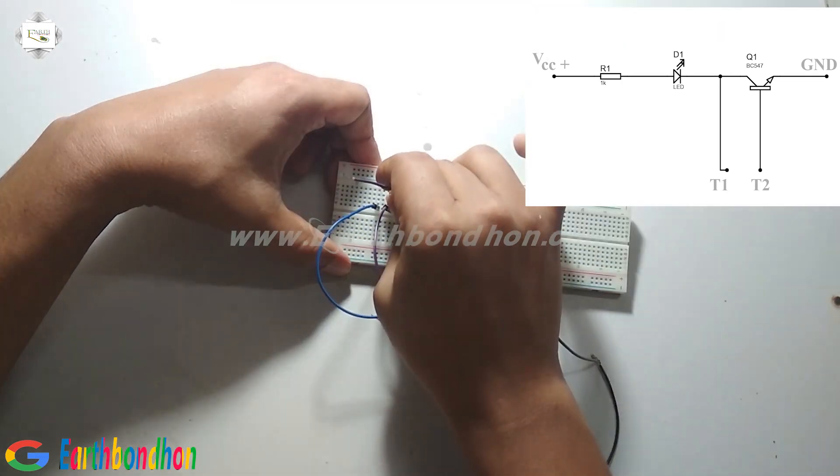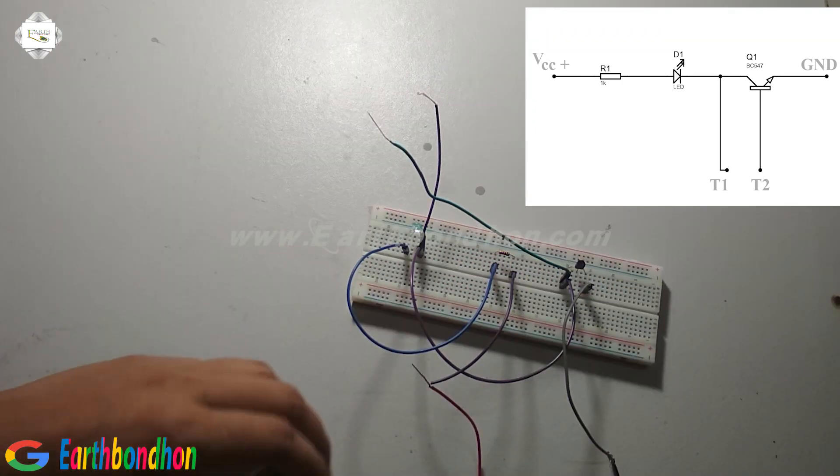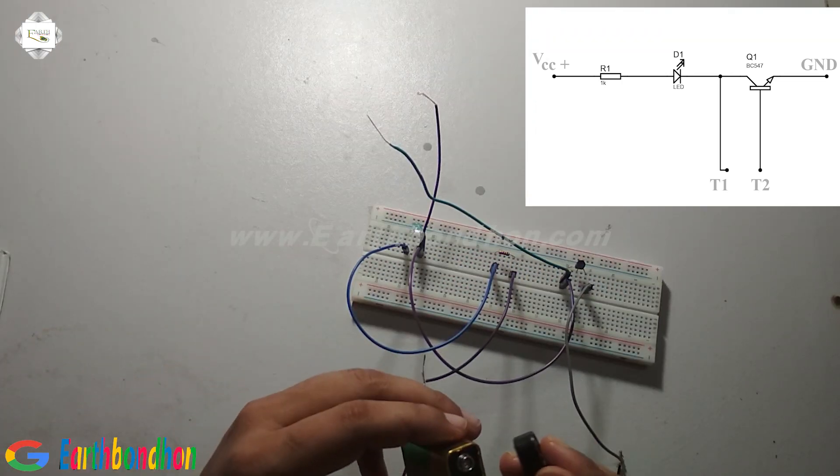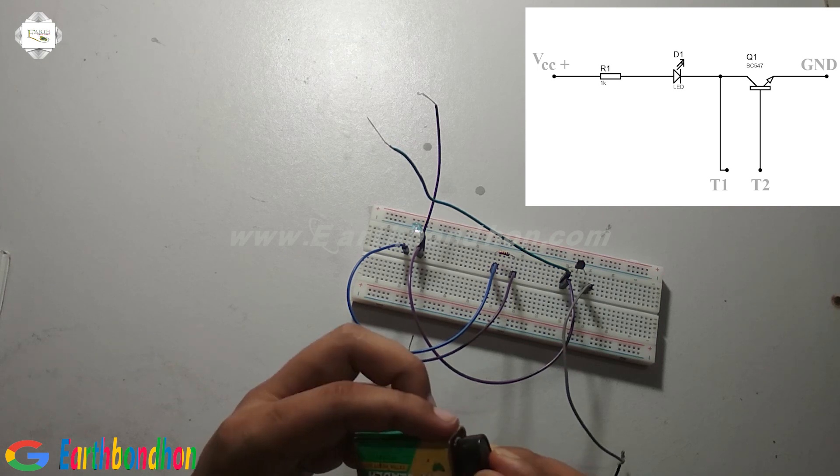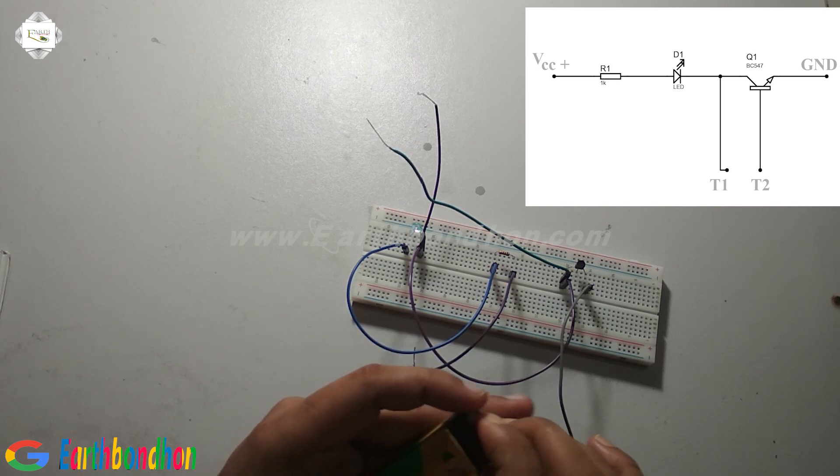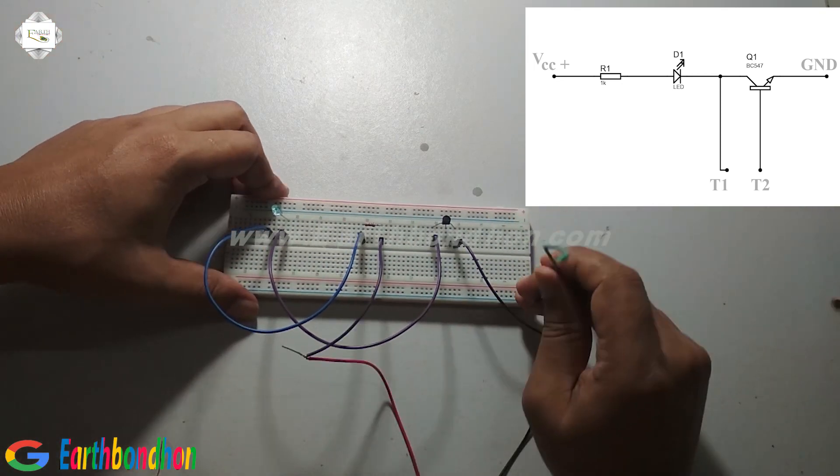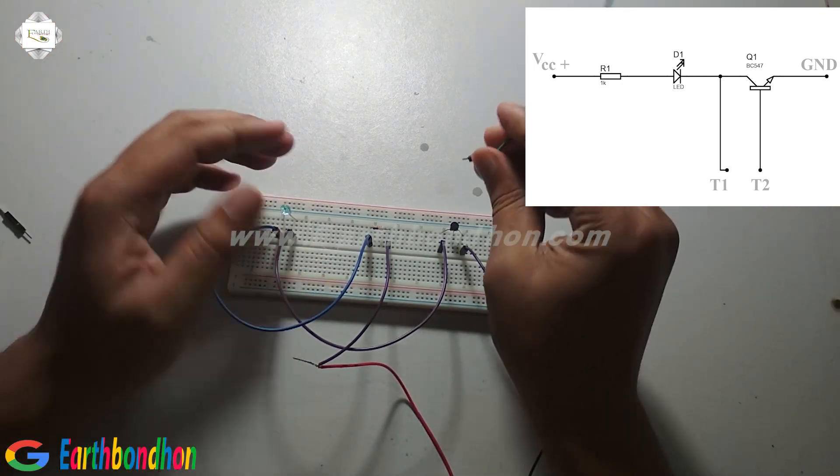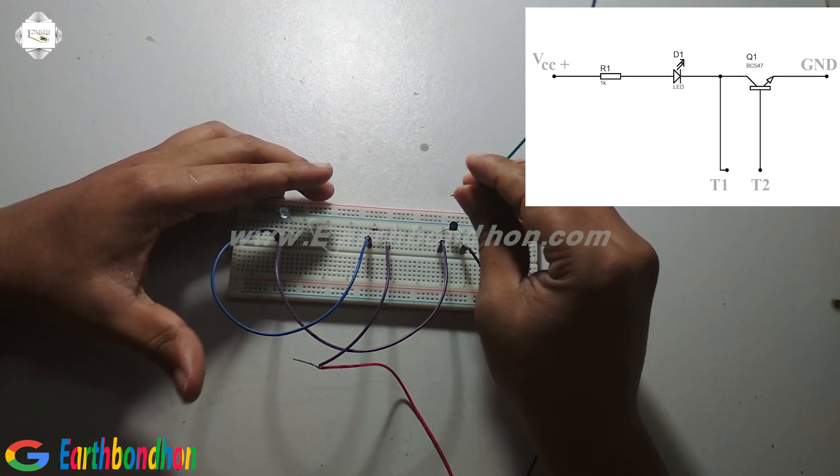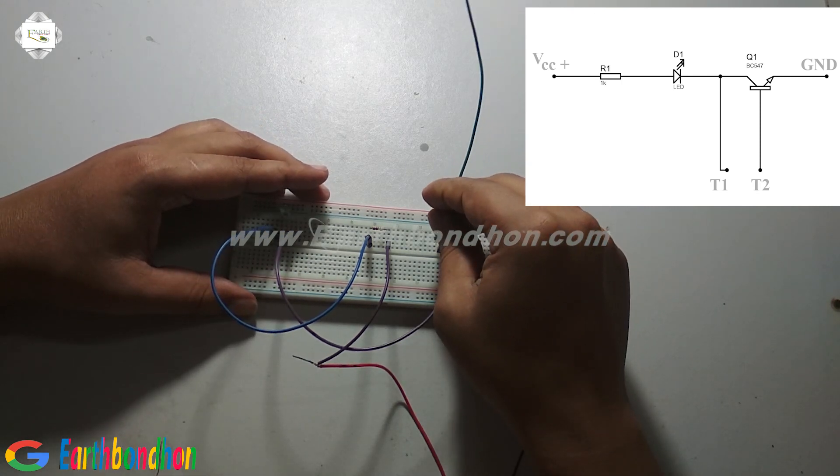Now it supplies 9 volts. Now output to terminal, TASC terminal. TASC terminal one is collector, this is collector.